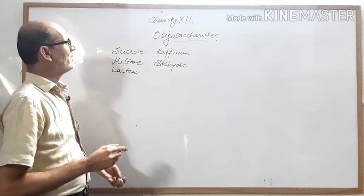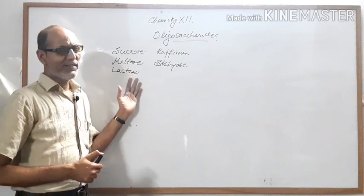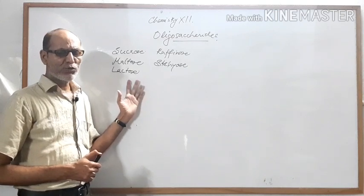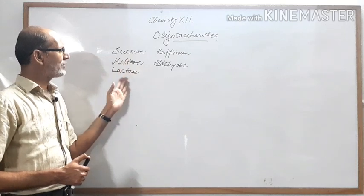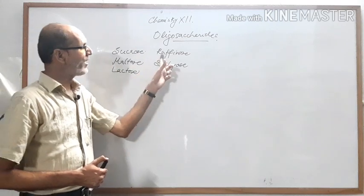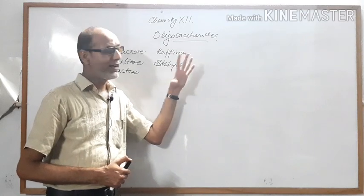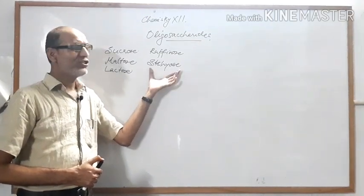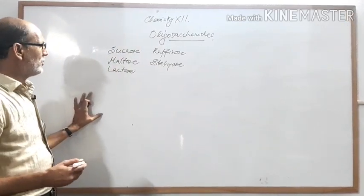Here are some examples of oligosaccharides. Sucrose, maltose, and lactose will break into two monosaccharides. Raffinose will break into three monosaccharides. Stachyose is an example of a tetrasaccharide — it will break into four monosaccharides. So the oligosaccharides have three varieties, which we will explain.